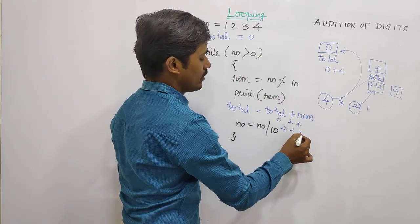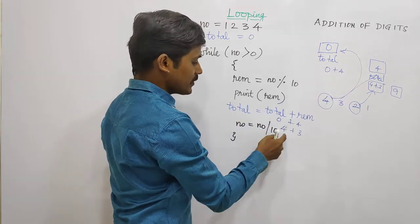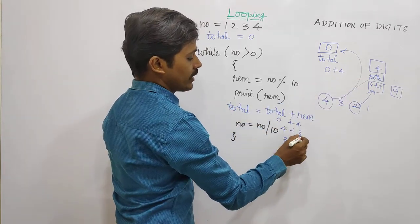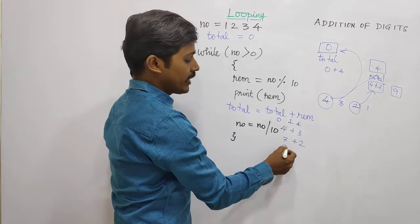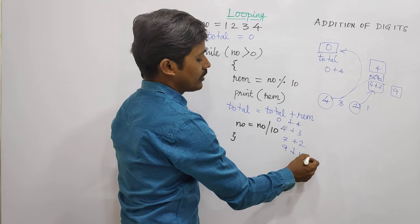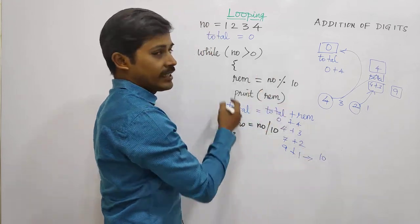Reminder is 3. Total is 7. That means total is 7. Plus 2. Reminder is 9. That means total is 10. That means number is 0.